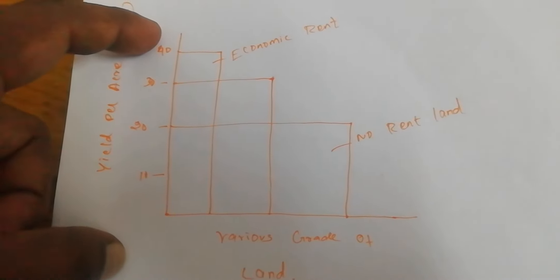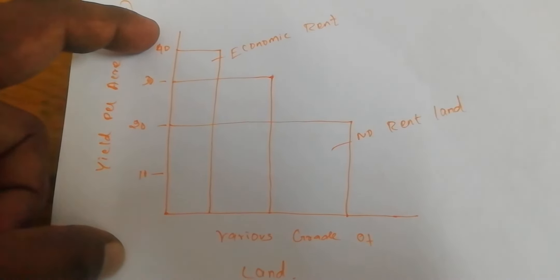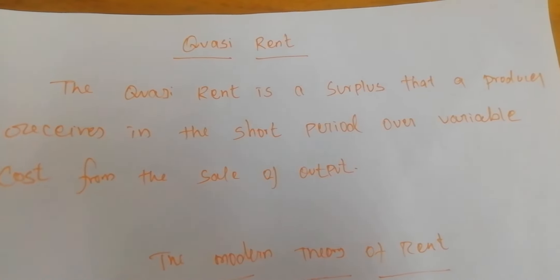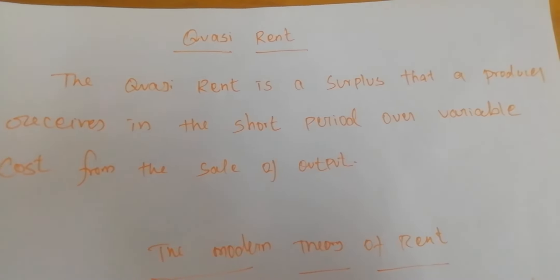So the three grades are A, B, and C. A-grade land produces 40 bags and gets economic rent. B-grade land produces 30 bags and also gets economic rent. C-grade land never gets economic rent and is considered the no-rent land.